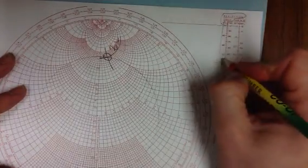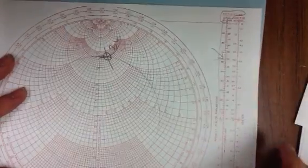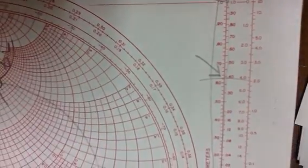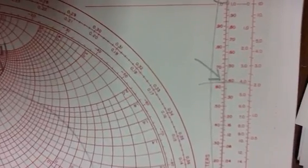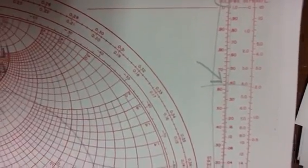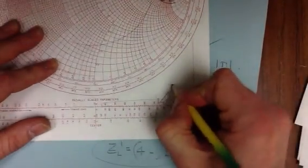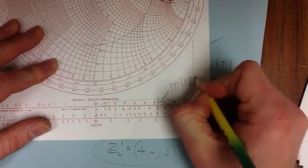And if I do that, I will see that the magnitude of the reflection coefficient is 0.625. So then I can say magnitude is 0.625.